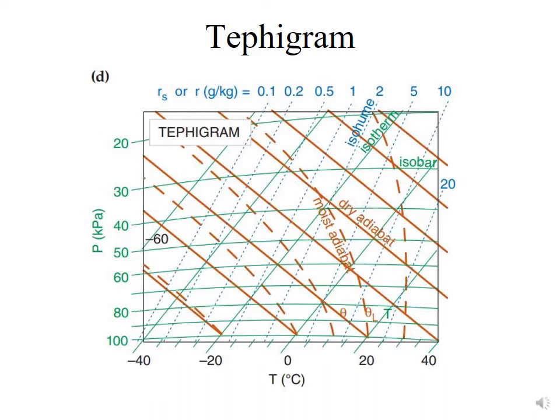The dry adiabats are also straight and have a 45-degree inclination to the left, while moist adiabats are curved.